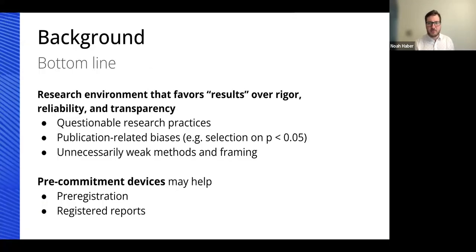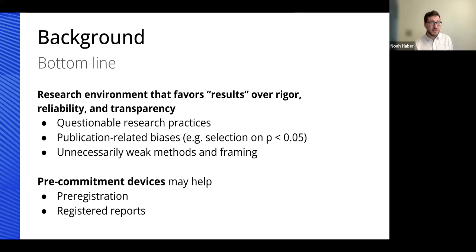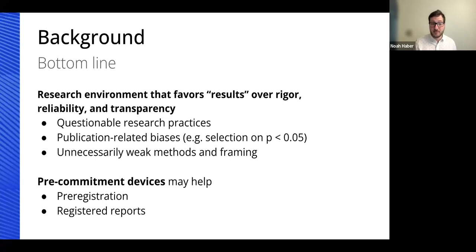What we have is a research environment that favors results over rigor, reliability, and transparency. We have researcher-related questionable research practices, publication-related biases, and probably weak methods that we can fix. The Center for Open Science talks a lot about devices and processes we can use — we're going to call them pre-commitment devices — that might help here. The two we're going to focus on in particular are pre-registration and registered reports.